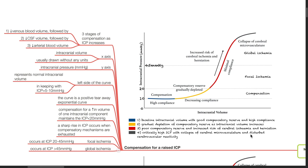As a summary, compensation for increase in volume of one intracranial component maintains the ICP below 20 mmHg initially. However, a sharp rise in ICP occurs when compensatory mechanisms are exhausted. Focal ischemia occurs at ICP of 20 to 45 mmHg. Global ischemia occurs when ICP exceeds 45 mmHg.